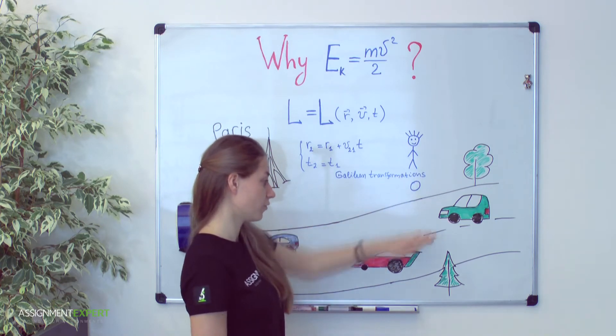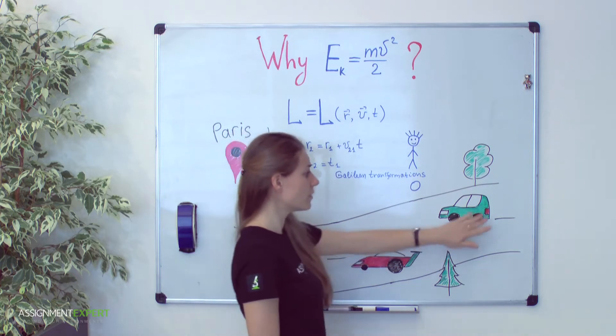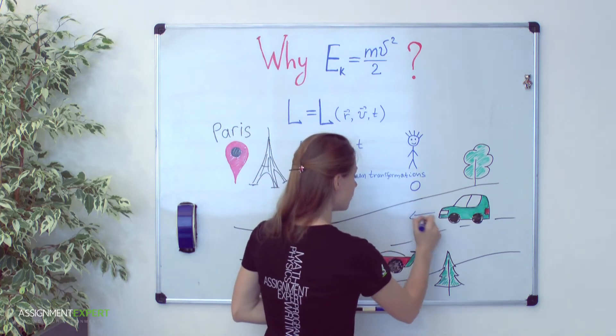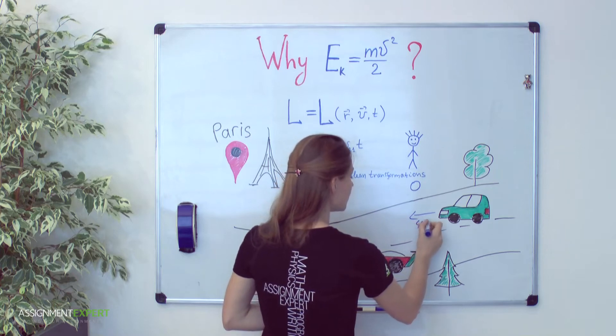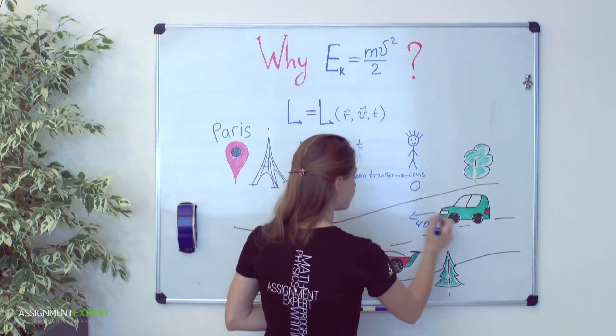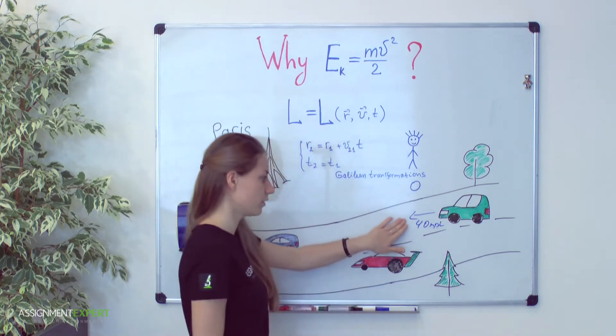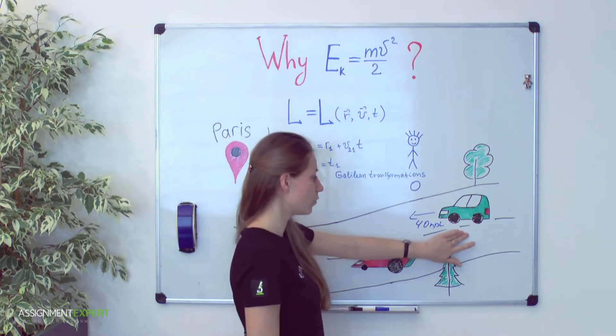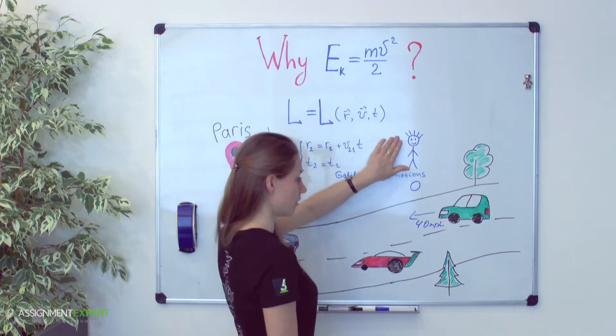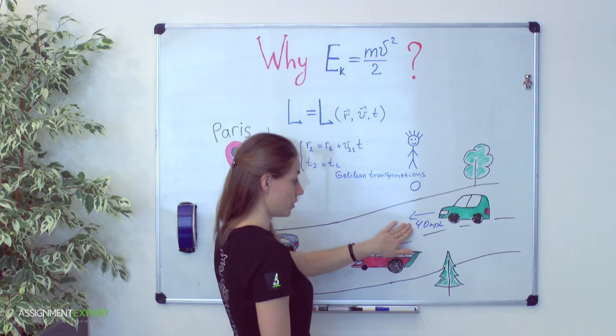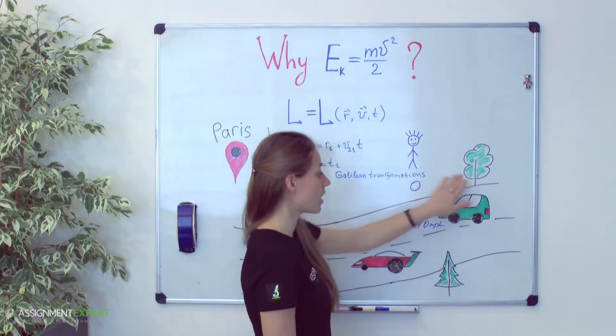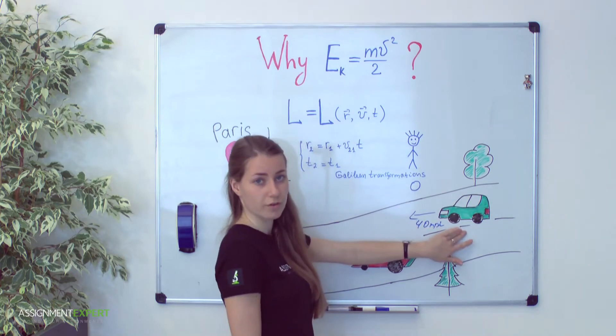Look, let's choose this guy as our first coordinate system and he will be our origin of coordinates. Then let's take this green car as our second coordinate system and suppose that it moves with some velocity say 40 miles per hour. You see that it's constant velocity and this green car moves relative to our first guy with constant velocity. Therefore we can say that our green car is inertial reference frame.